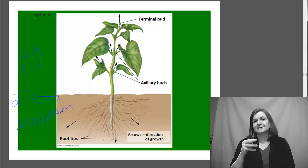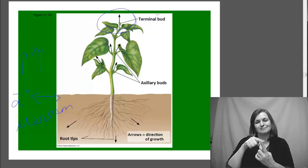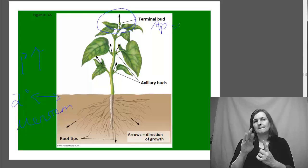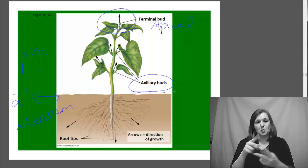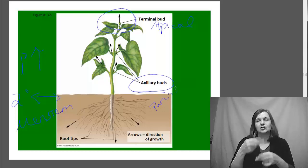Meristem tissue is associated with the terminal bud that we called before the apical bud of our plant and our auxiliary buds. These are places where we have a lot of growth. And the cell type primarily in these locations would be parenchyma cells.